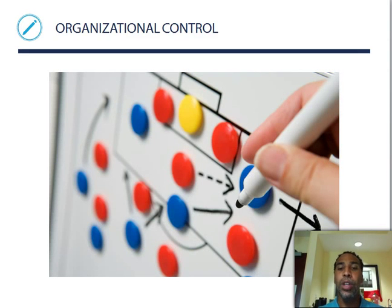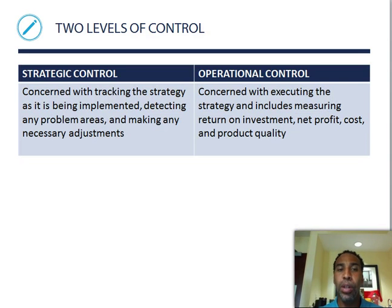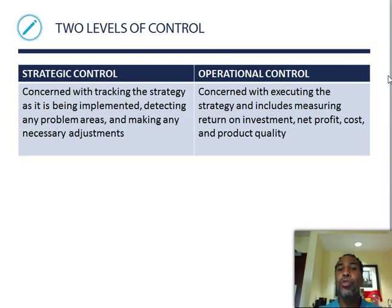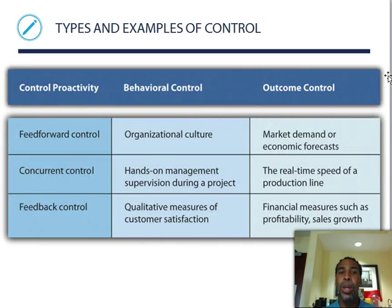Organizational control has two levels. Strategic control is concerned with tracking the strategy as it is being implemented, detecting any problems or problem areas, and making necessary adjustments prior to or during implementation. Operational control is concerned with executing the strategy and includes measuring return on investment, net profit, cost, and product quality.